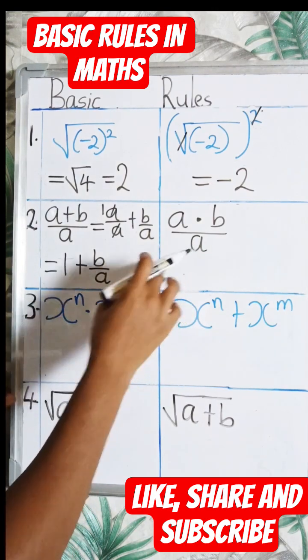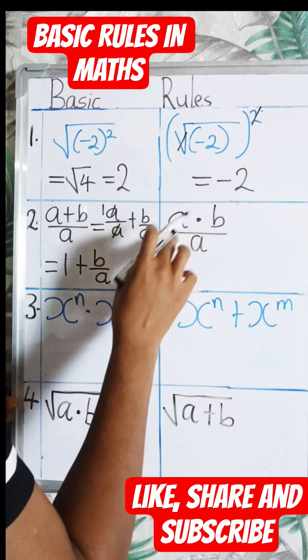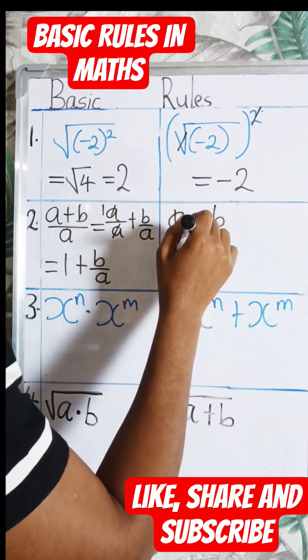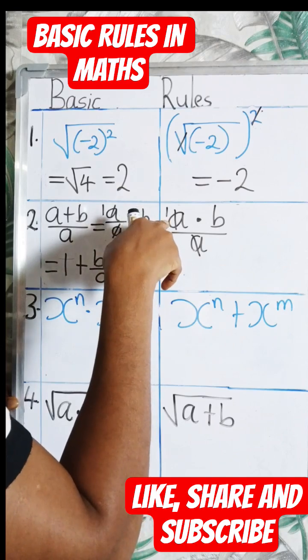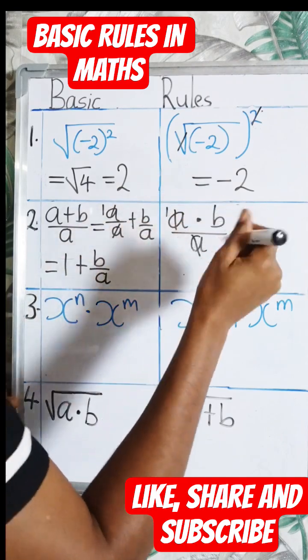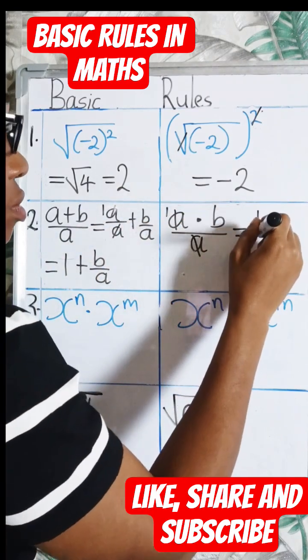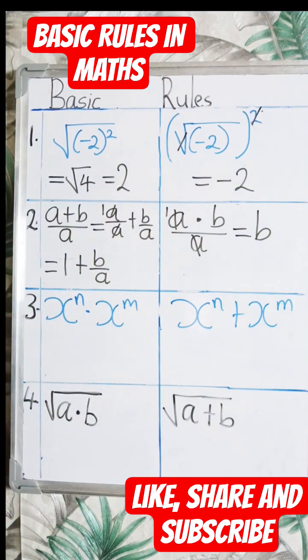Now here, a times b divided by a. A divided by a will give us 1, and then 1 times b equals b.